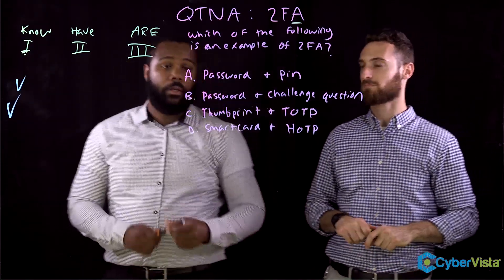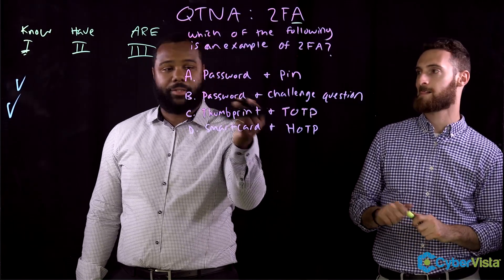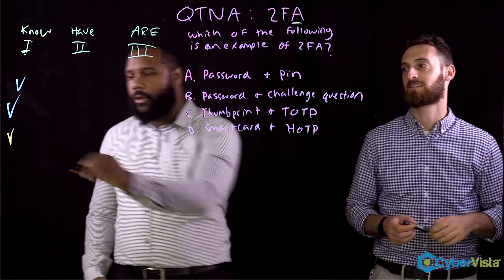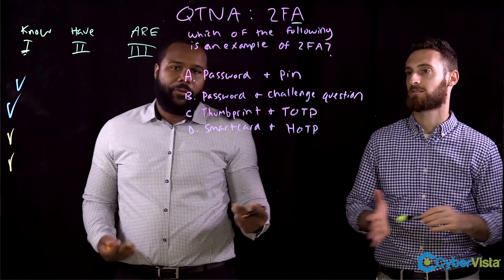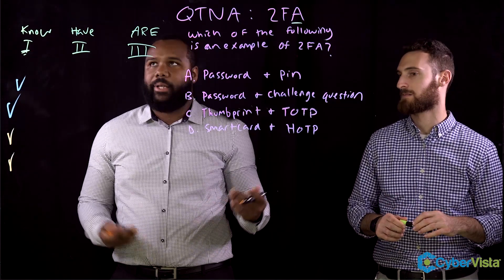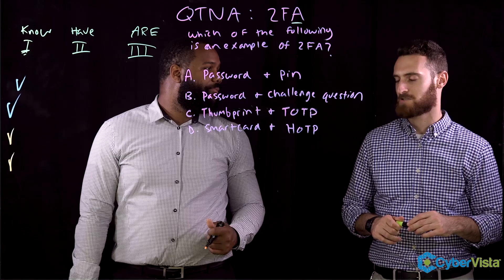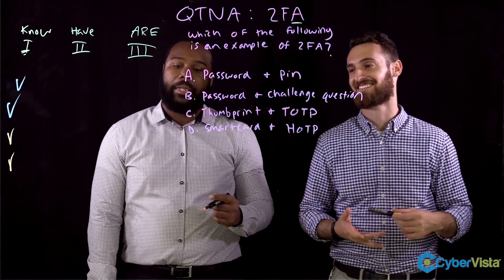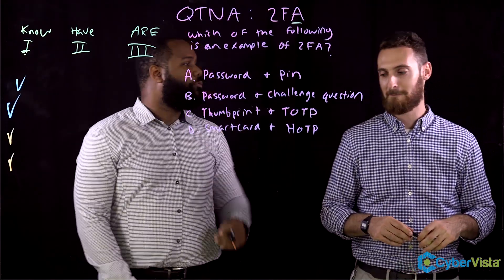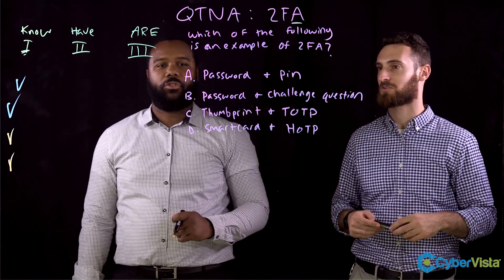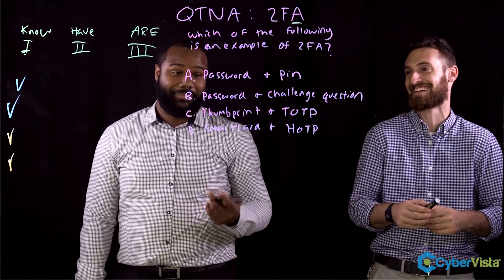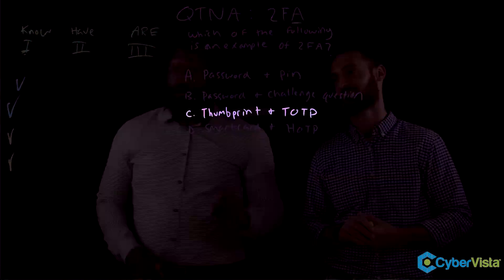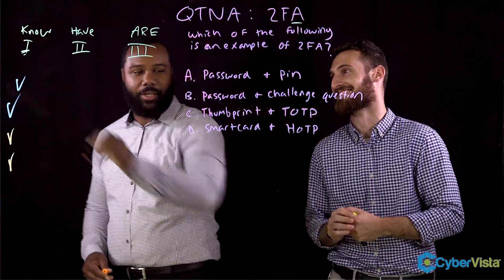Moving on to B. We have a password, which falls under something that you know, and then we have a challenge question, which also falls under something that you know. A challenge question is like when you forget your password and they ask something like, 'What's your mom's maiden name?' or 'What was the name of the street you grew up on?' Both of these fall under something that you know, so B is not two-factor authentication either.